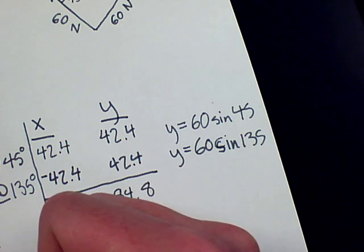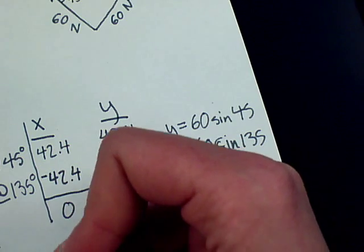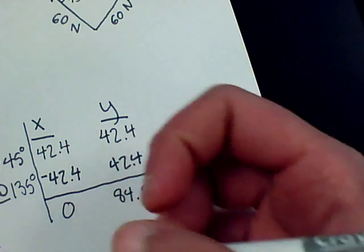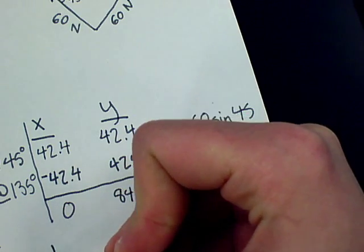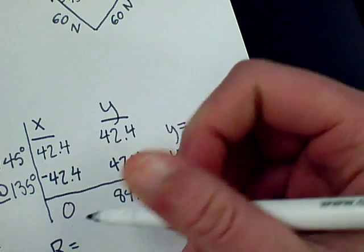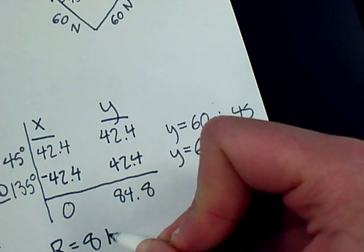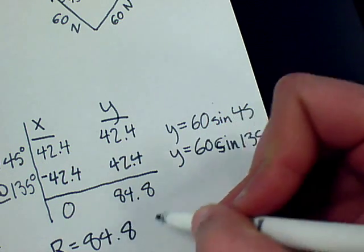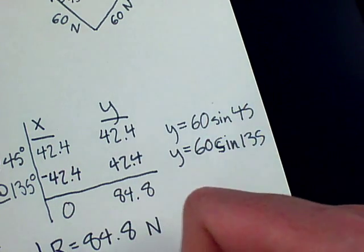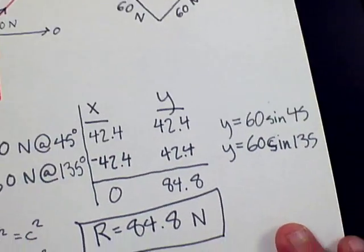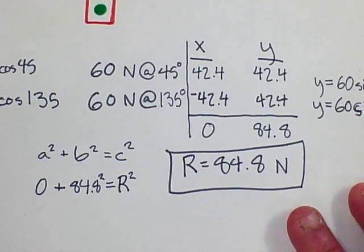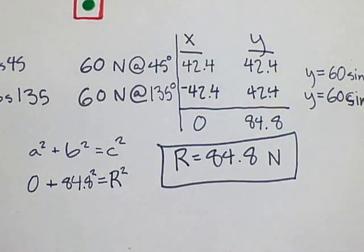And then our a squared will be 0, so it really doesn't affect our total. And b squared will be 84.8 squared. But our resultant is also squared. So our resultant is the square root of 84.8 squared, which is 84.8. So our resultant is equal to 84.8 newtons.